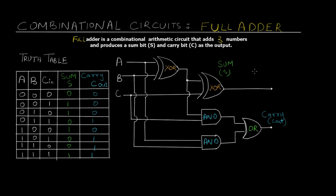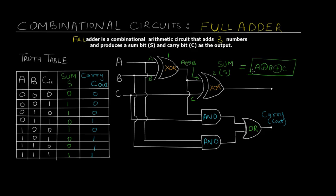Now let's see the expression derived from this logic circuit. For the sum, A and B go as inputs to the first XOR gate, giving output A XOR B. This output is then provided as an input to the next XOR gate, with C provided separately as the second input. So the final sum output is A XOR B XOR C.